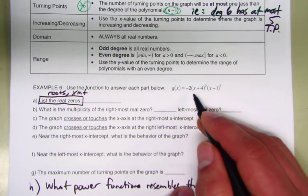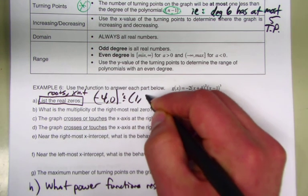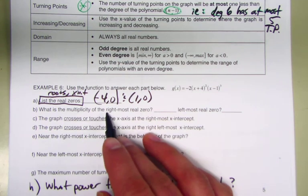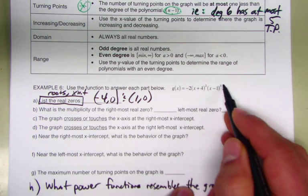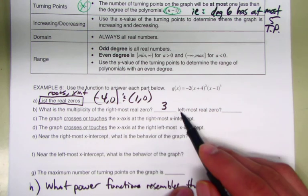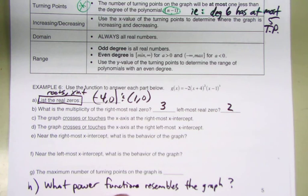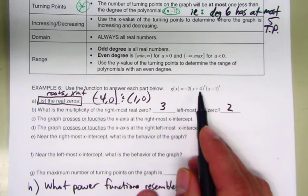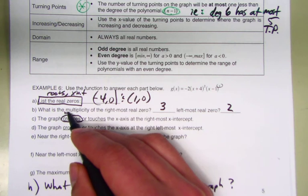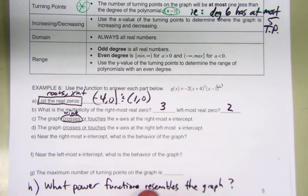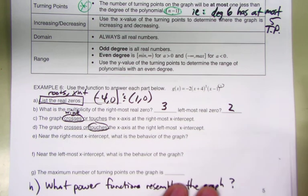The two x-intercepts are negative four and one. The one on the right is (1, 0) — its multiplicity is three. The leftmost x-intercept at −4 has a multiplicity of two. At x = 1, the graph will cross and wiggle its way through, because it's odd — three instead of one. At the other x-intercept at −4, it will just touch and bounce off, because the multiplicity is even.